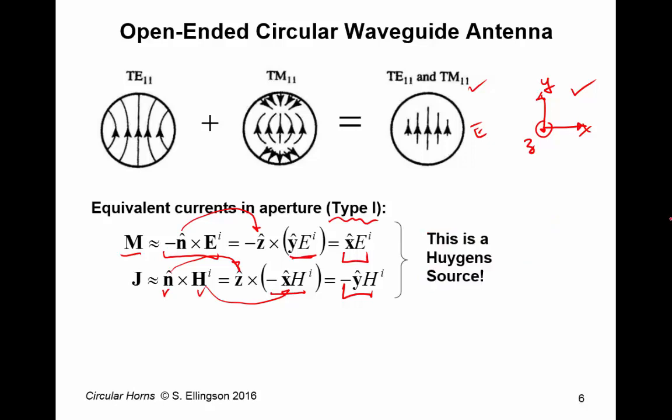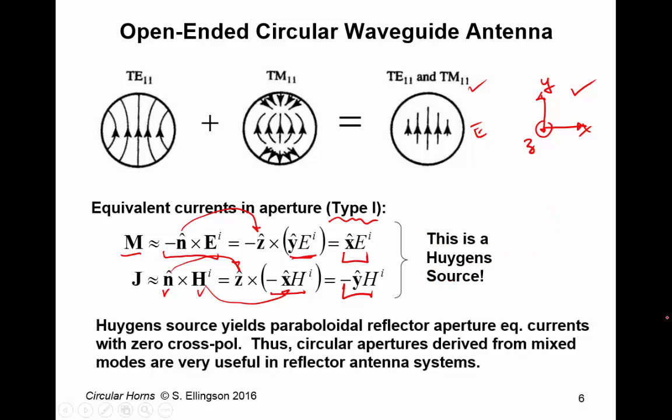So, we see that we have magnetic and electric currents which are perpendicular to each other. This is a Huygens source, as we've discussed in previous lectures. So, circular apertures derived from mixed modes are very useful in reflector antenna systems.